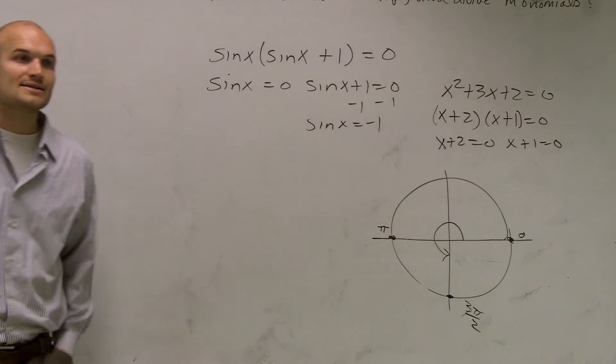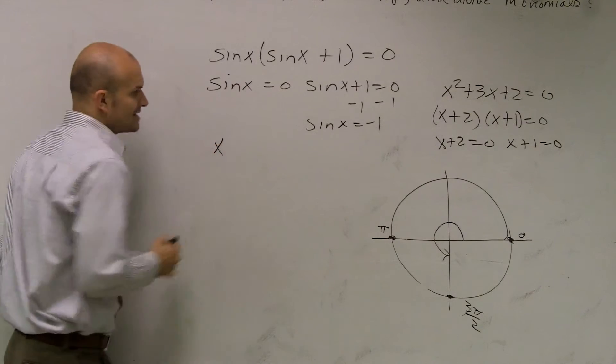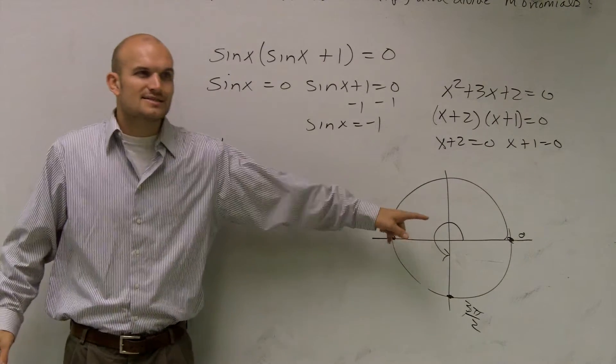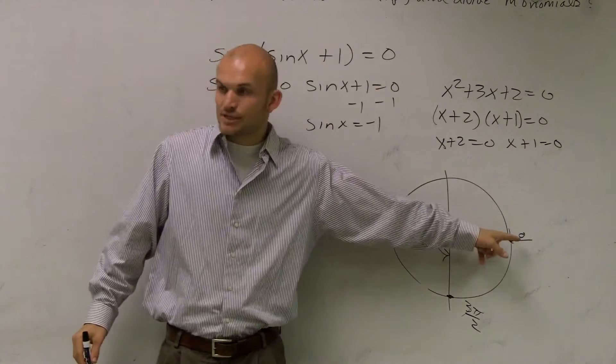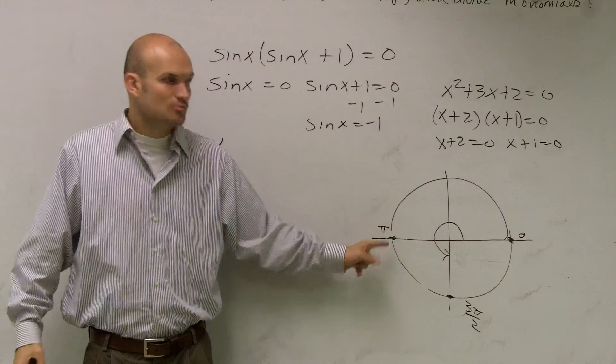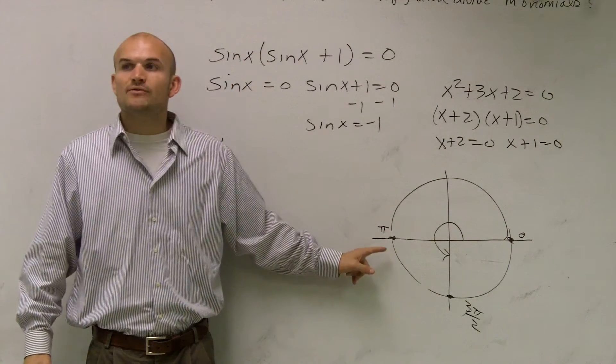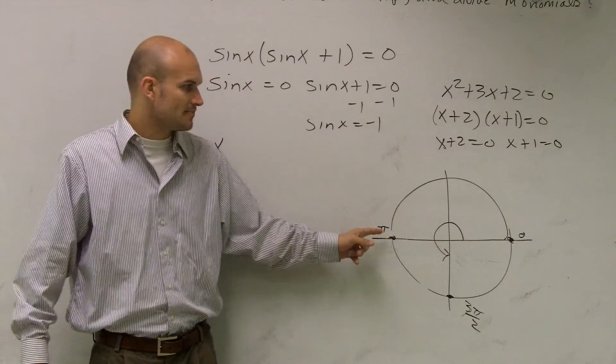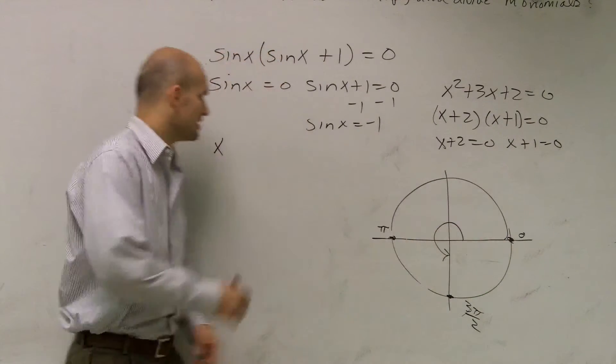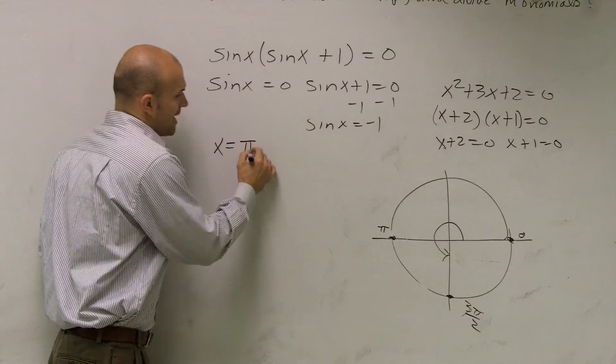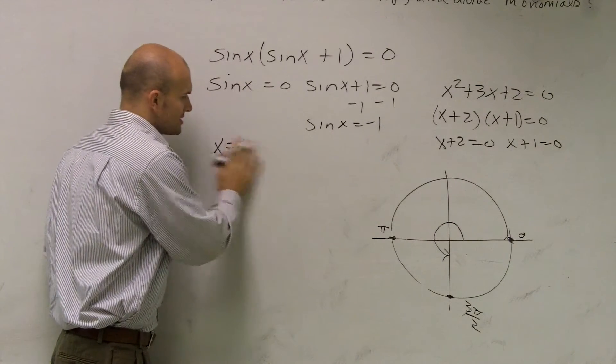So if I need to find my answers here, what I'll do is say x equals—rather than saying you could say x = 0 + 2π, you could say x = π + 2π, right? But again, you're being redundant. You could say x equals πn.